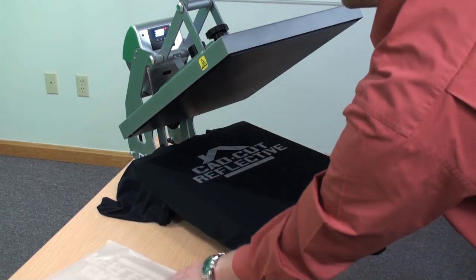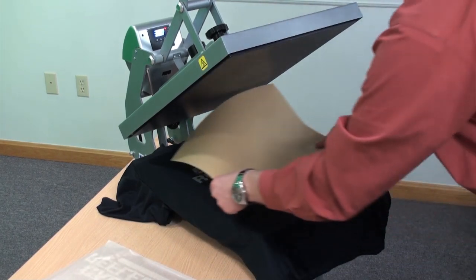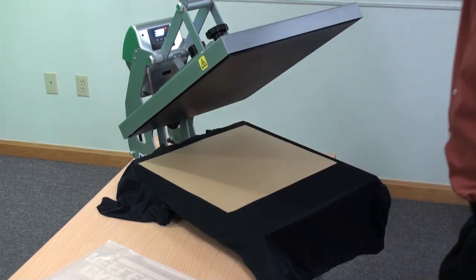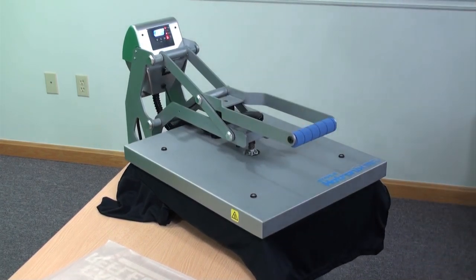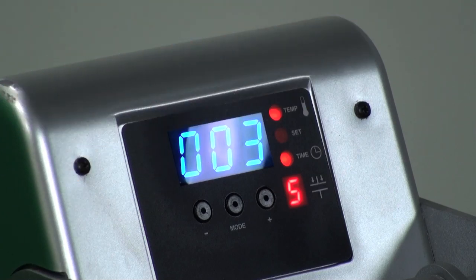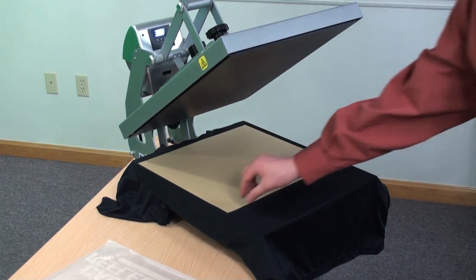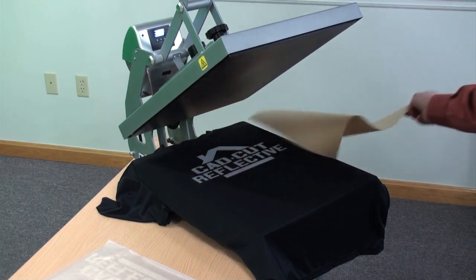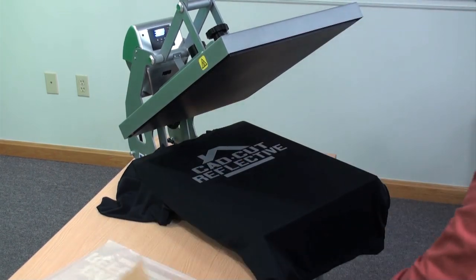After you've removed the backing warm or cool, the second step is to cover with a cover sheet and heat apply for 15 more seconds. Simply remove your cover sheet, we have a completed garment.